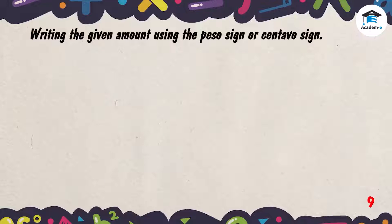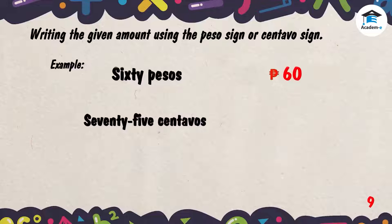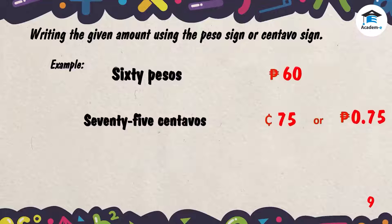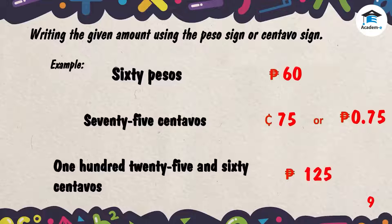Writing the given amount using the peso sign or centavos sign. First example: 60 pesos — write the peso sign, then write 60. Second example: 75 centavos — use the centavos sign then write 75, or write peso sign then zero, dot, and 75. Third example: 125 pesos and 60 centavos — write peso sign first, then 125, then a dot, then 60. No need to put the centavos sign after the 60.